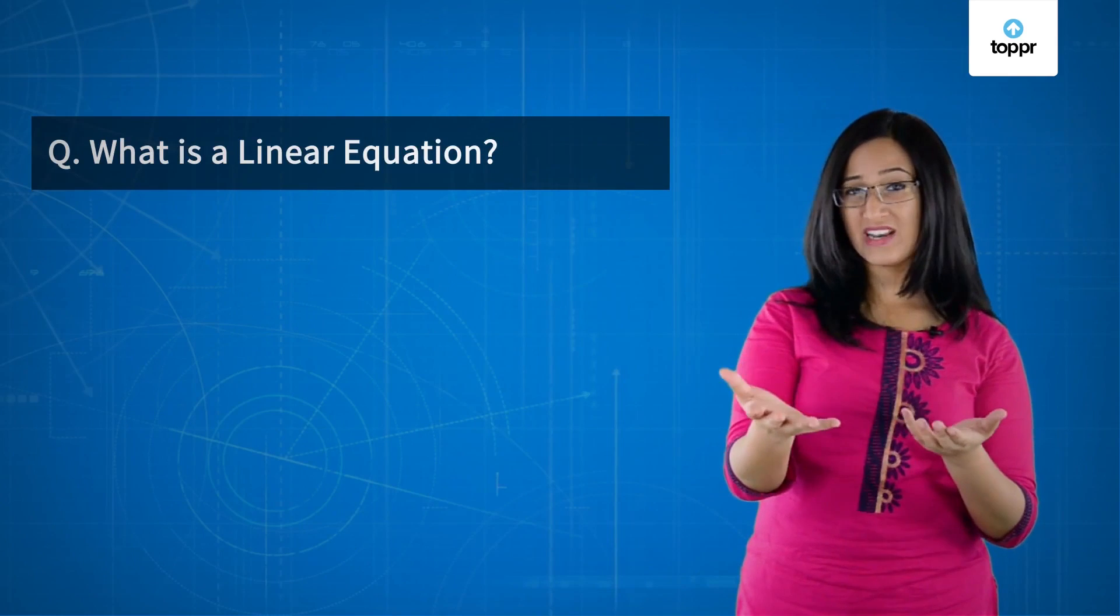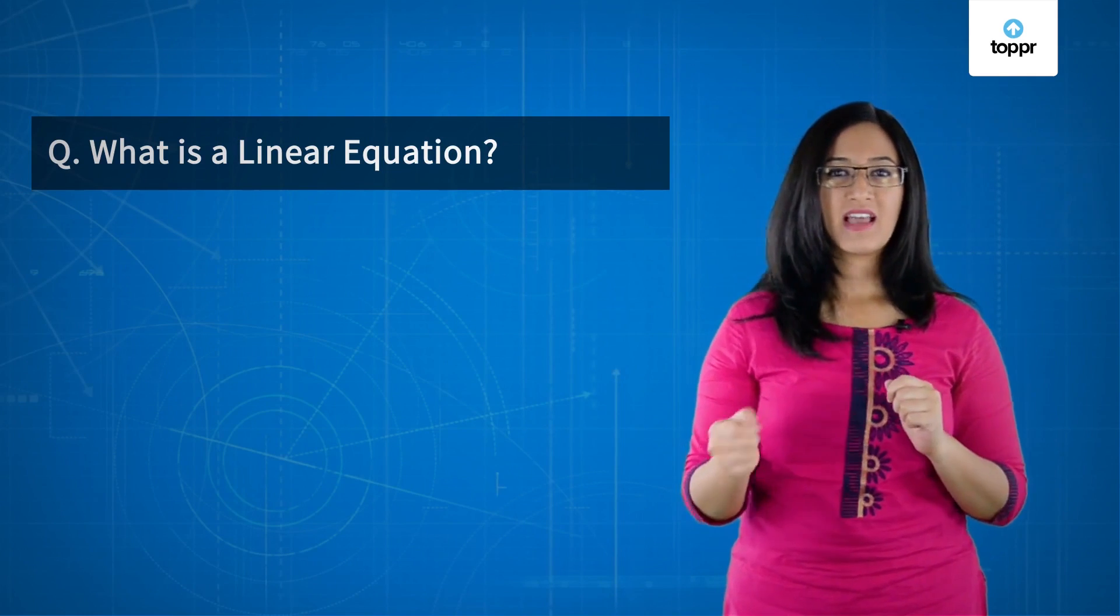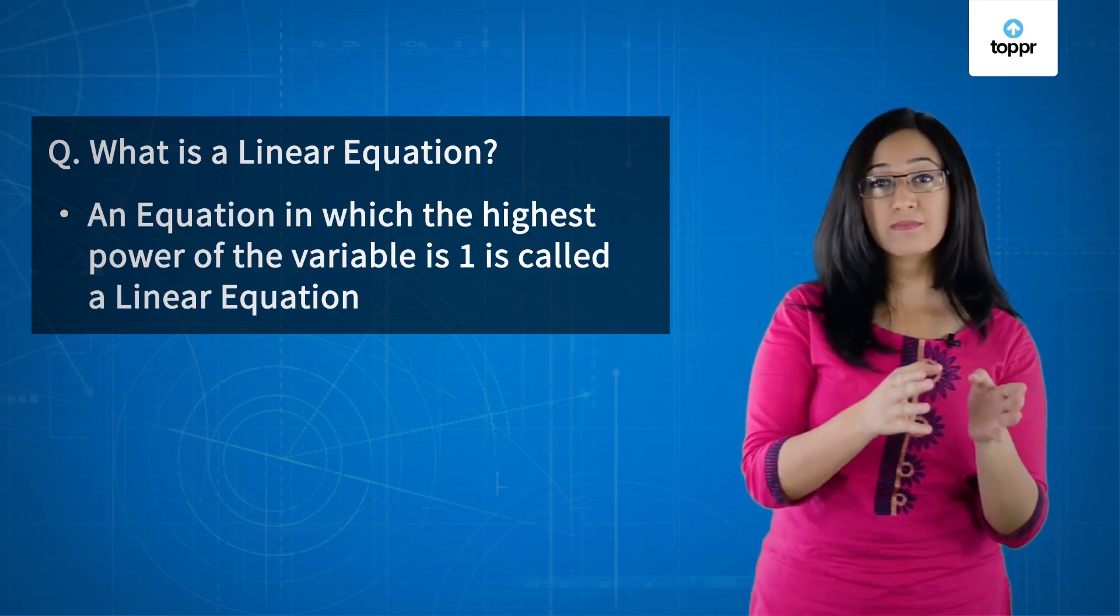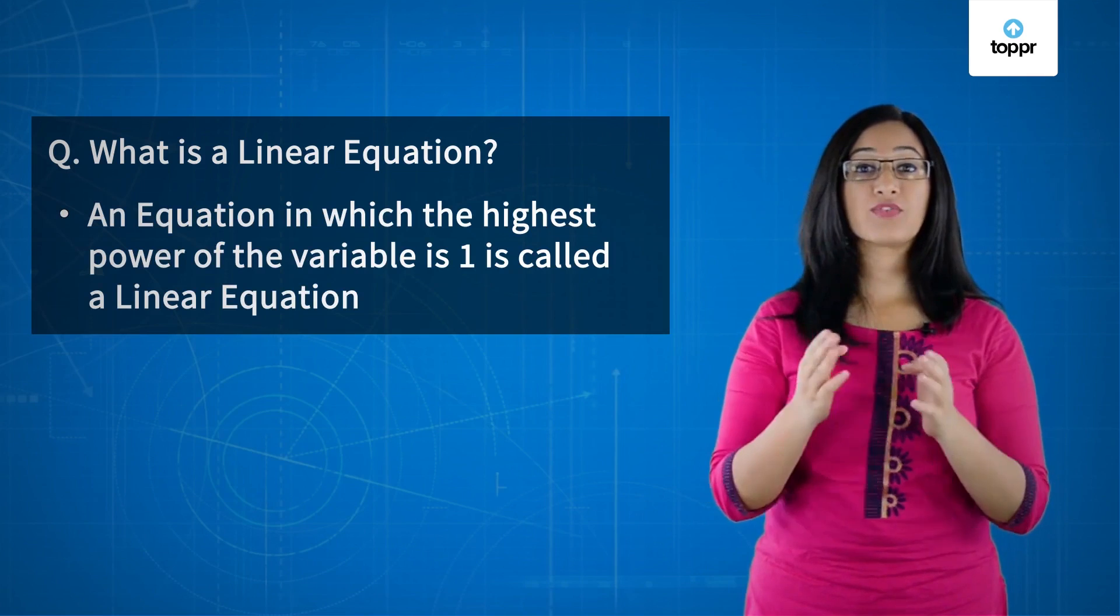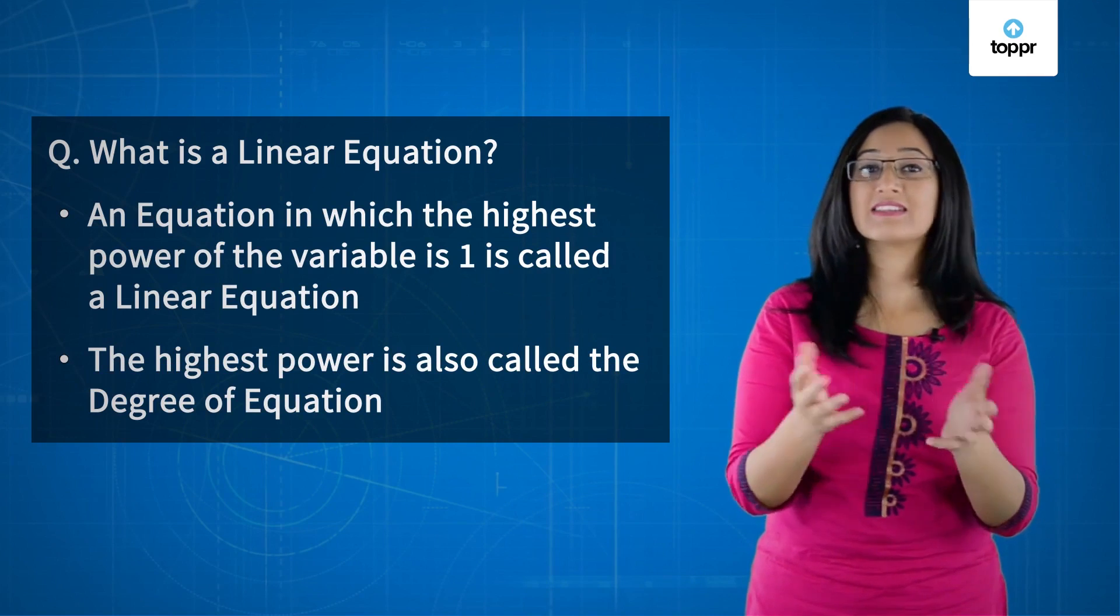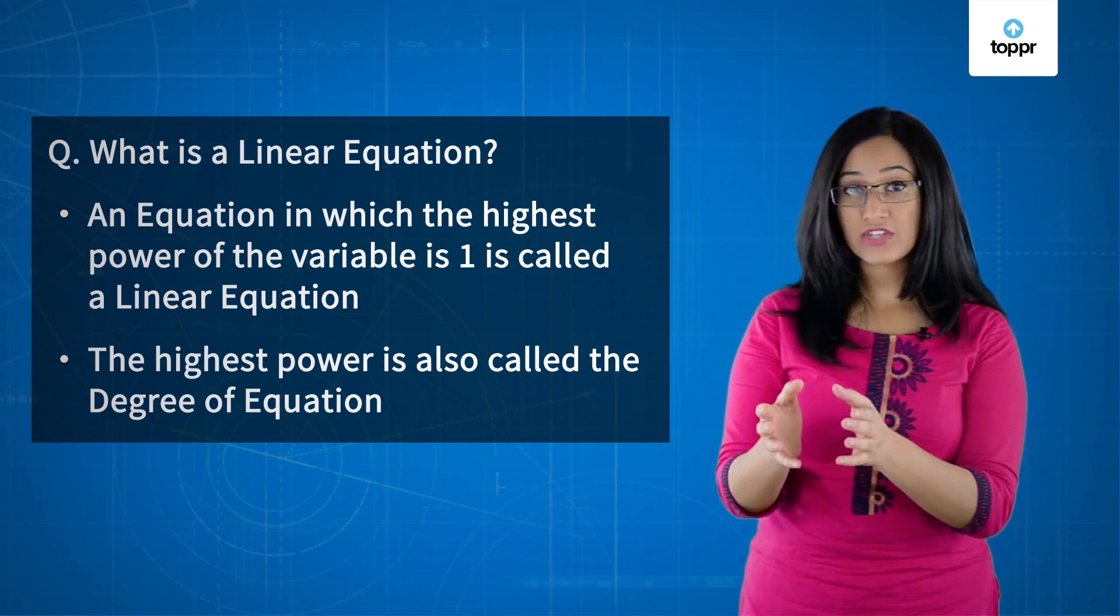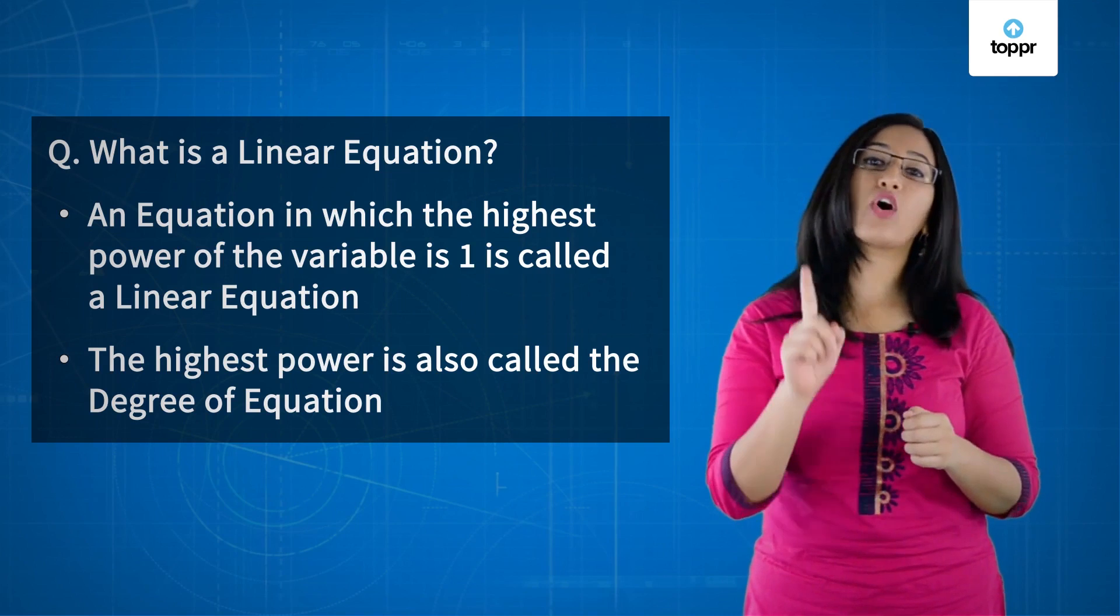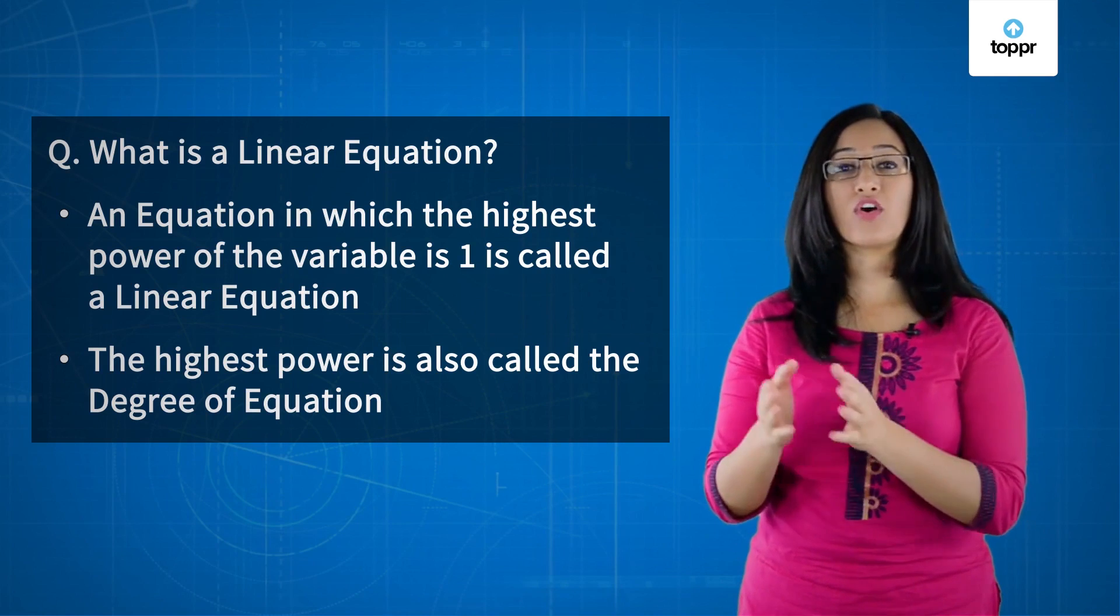You do remember what a linear equation is, don't you? Let's do a quick recap. An equation in which the highest power of the variable is 1 is called a linear equation. And we refer to the highest power as the degree. So we can say that a linear equation is an equation with a degree of 1. Here, degree denotes the highest power of the variable.